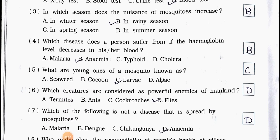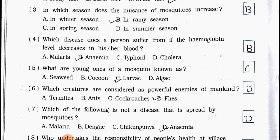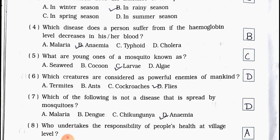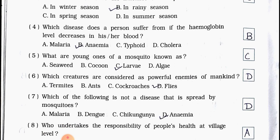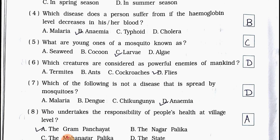Question number 4: Which disease does a person suffer from if the hemoglobin level decreases in his or her blood? Option A. Malaria, B. Anemia, C. Typhoid, D. Cholera. Answer is option B — Anemia.